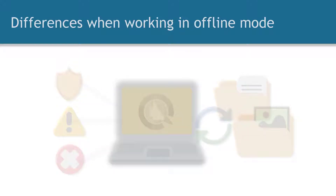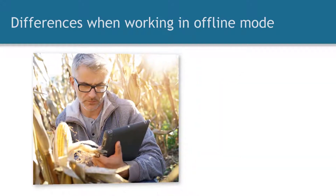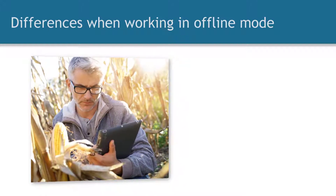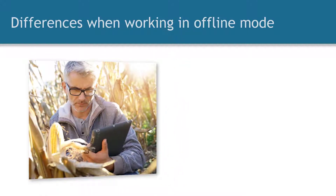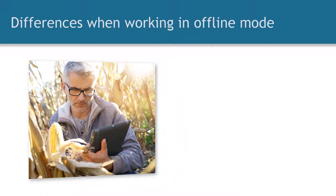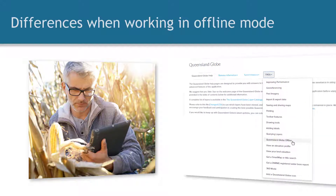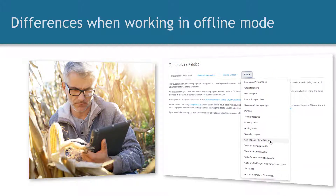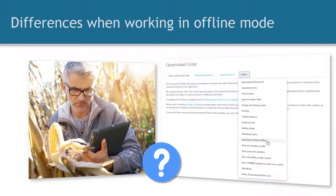Layers are toggled on and off at the service level rather than the sub-layer level, and this may influence what you choose to include in your map. Visit the Queensland Globe help page for more details of these differences.